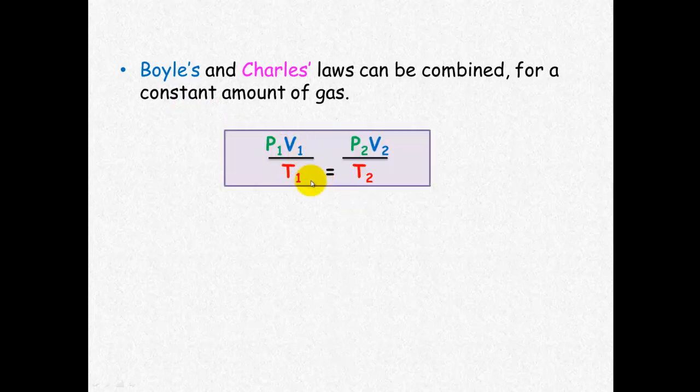So what we've got is P1V1 over T1 equals P2V2 over T2. Note, and this is really important, that the temperature must always be in Kelvin.